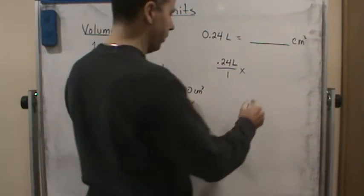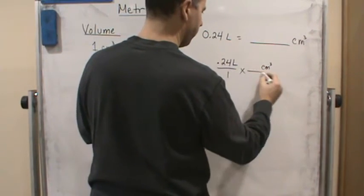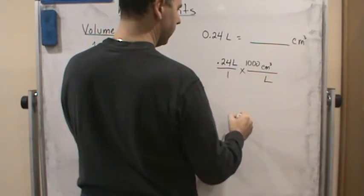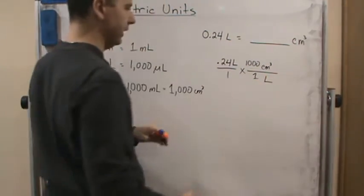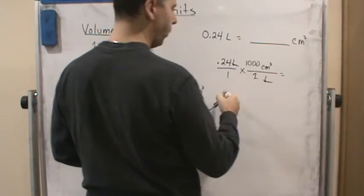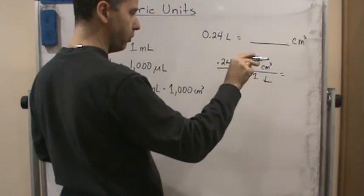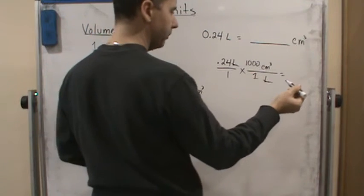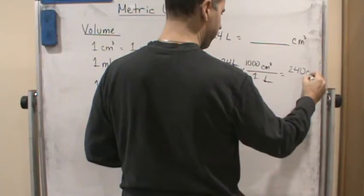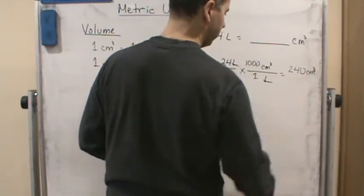So we want cubic centimeters on top and we want liters on the bottom. It's going to be a thousand cubic centimeters for every one liter. And so then the liters cancel. And we end up with a thousand times 0.24, which means we're going to move the decimal point to the right three place values. So that means we're going to have 240 cubic centimeters as our answer.